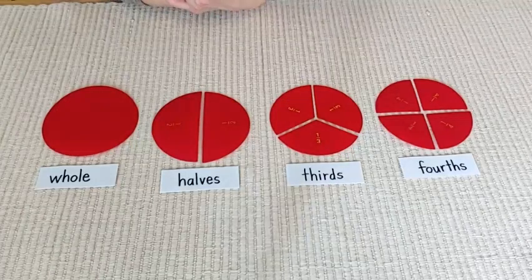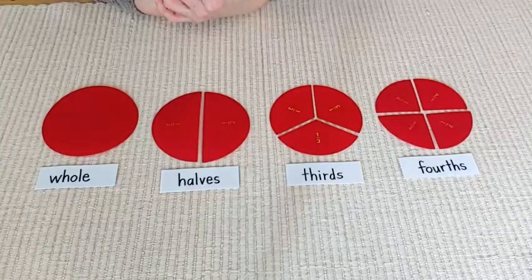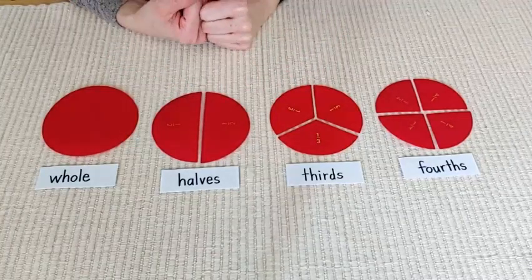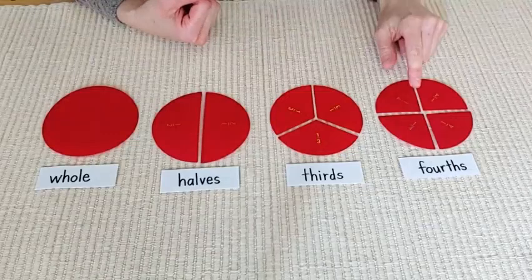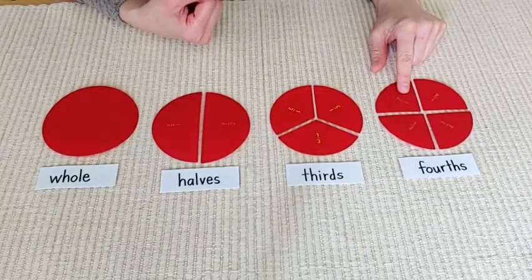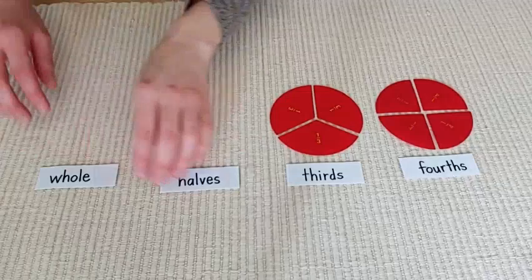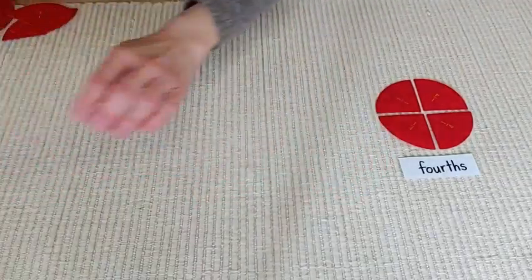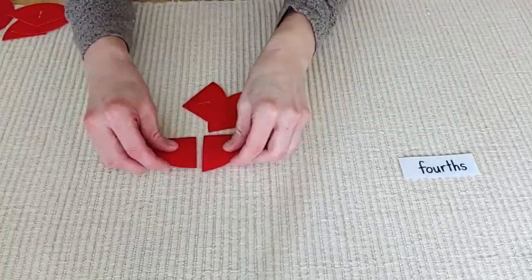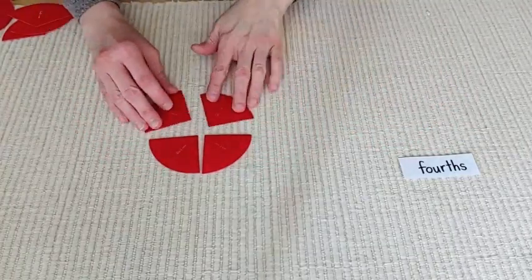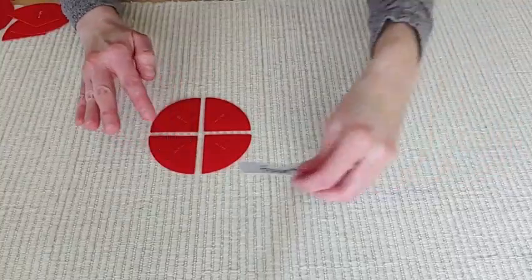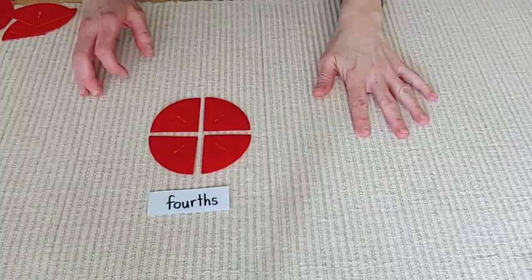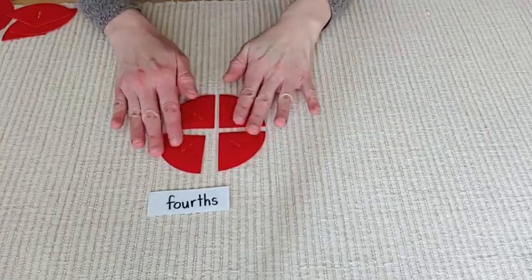Now, you'll notice that each family has a name and it's based on how many parts that it has. Let's have a little more fun with one family in particular. I'm going to play around with the fourths family over here. Let me slide these away for a second. And I chose the fourths because I have four people in my family. There is myself and my husband and my son and my daughter. And let's just pretend for a moment that the four of us are home.